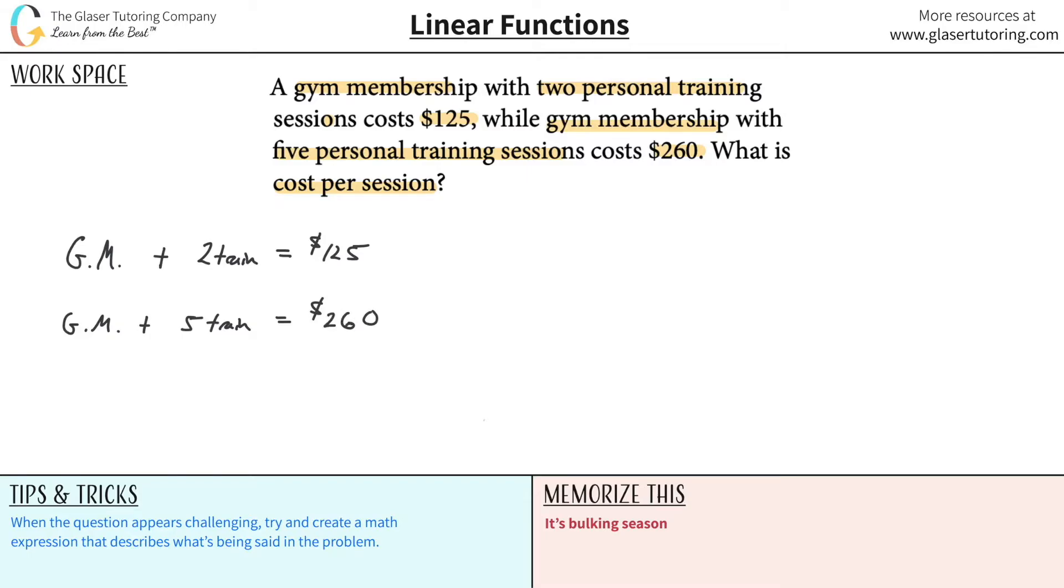And now what they want us to find is they want us to find the cost per session. So what I realize now is I'm going to have to try to now to get rid of these GM and the word train. I got to try to make these into singular variables.